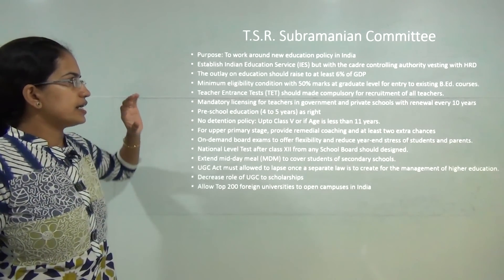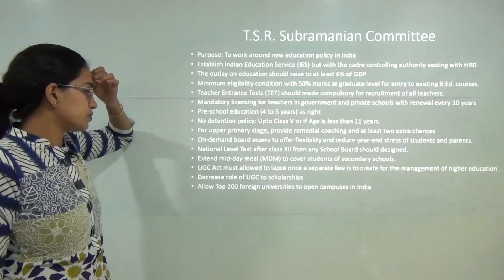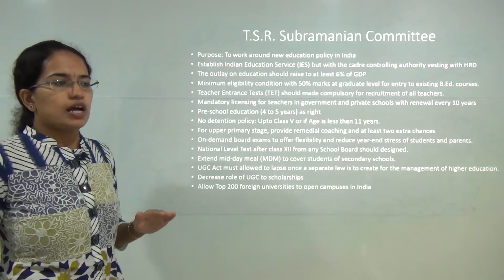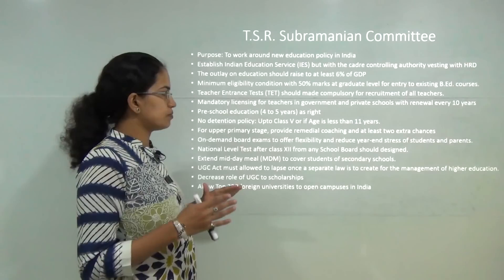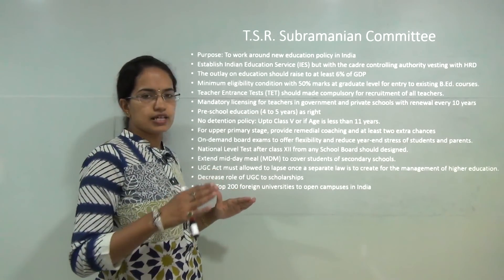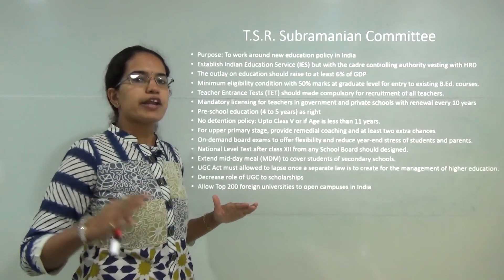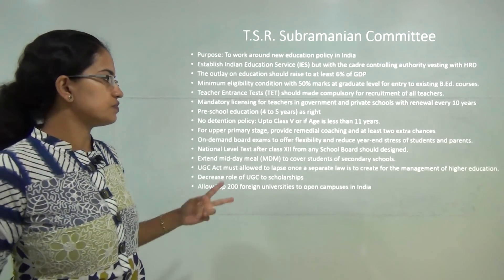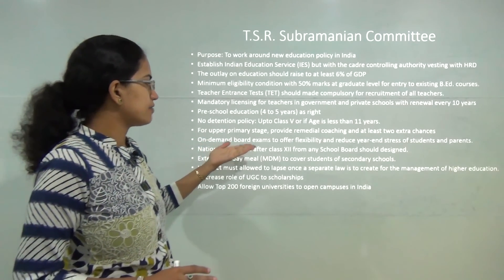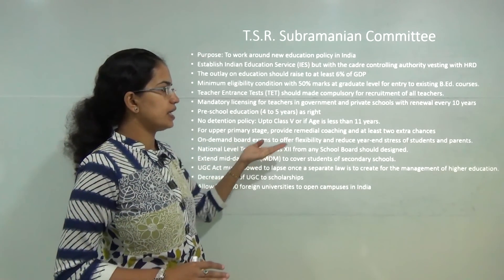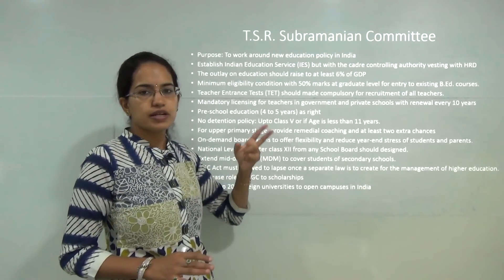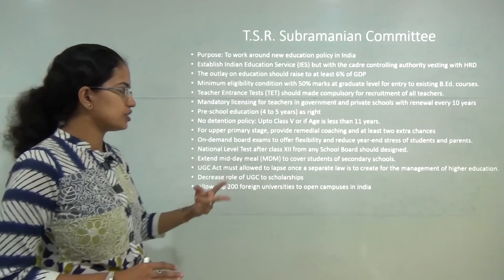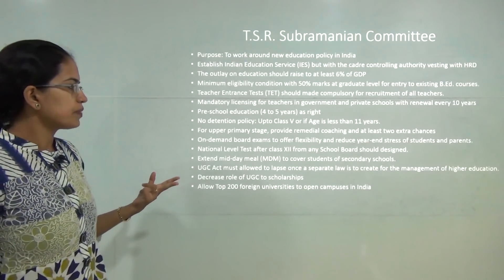The TSR Subramanyam Committee recommends increasing the GDP expenditure on education to 6%. It also recommends no detention policy for classes up to 5th standard or up to age 11, and for upper primary levels it talks about remedial coaching and providing two extra chances for students to appear for the examination.